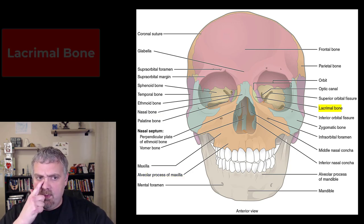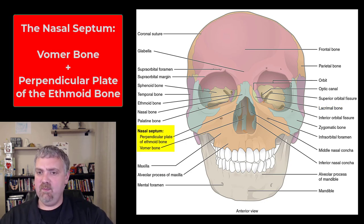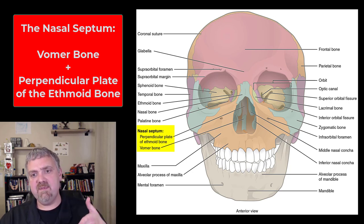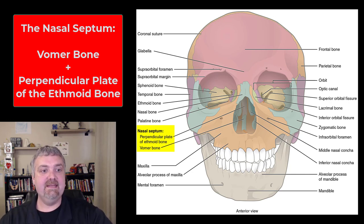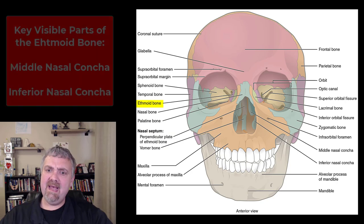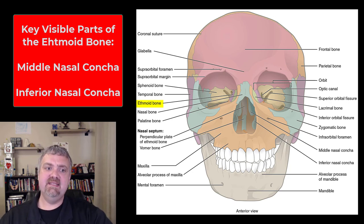You have the nasal bone again and the lacrimal bone behind it. Inside the nasal opening you see the nasal septum, which is made of two bones: the vomer — vomer means plow, so it's this plow-shaped bone — and the perpendicular plate of the ethmoid bone. Together the perpendicular plate of the ethmoid bone and the vomer make up your hard nasal septum. I have to disarticulate the skull to show you some of the key pieces of the ethmoid bone, so we'll come back to it.